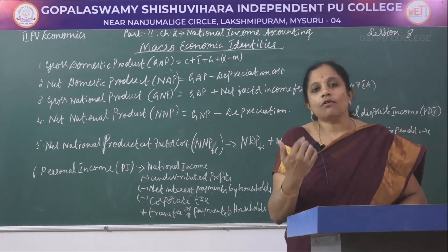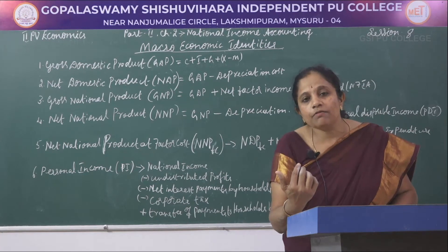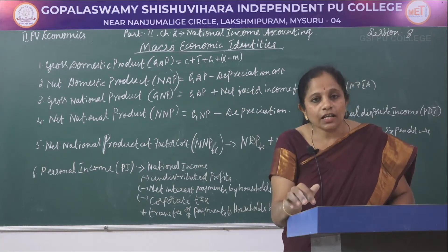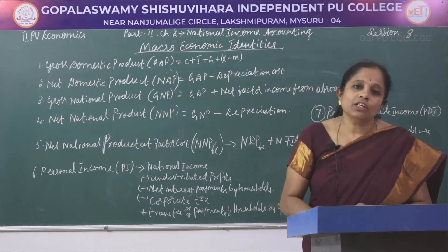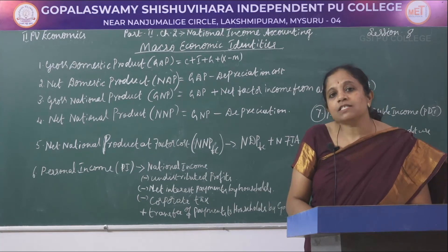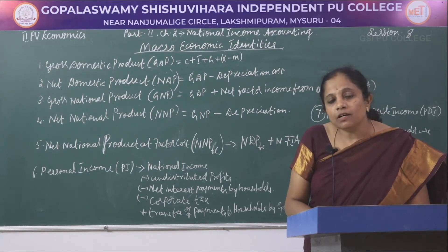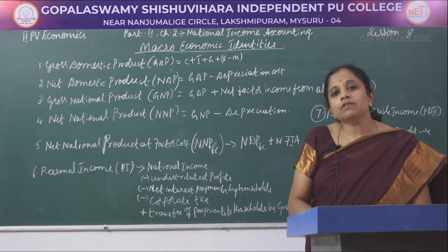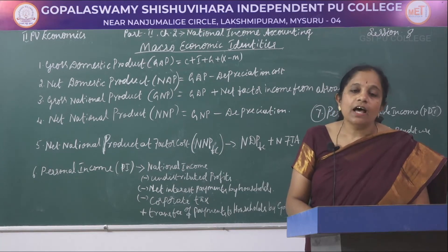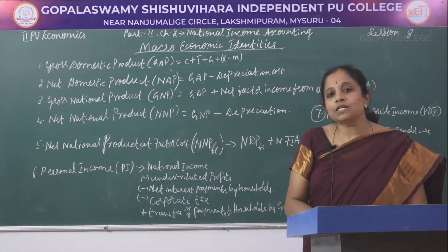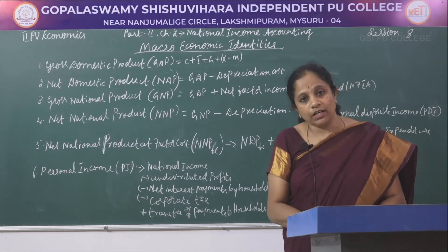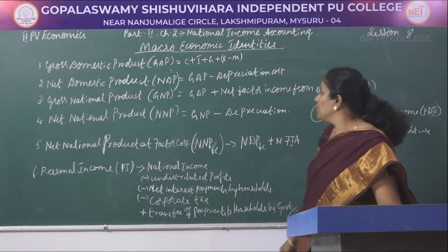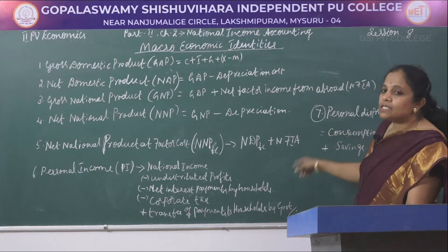After generating revenues from different sectors, the government pays money back to individual households — not just as cash but in the form of pensions, subsidies to farmers, goods supplied at fair price shops at subsidized rates, and investment in infrastructure for non-paying users (free riders). All these transfer payments to households by government are considered as personal income.